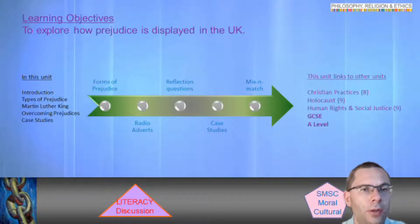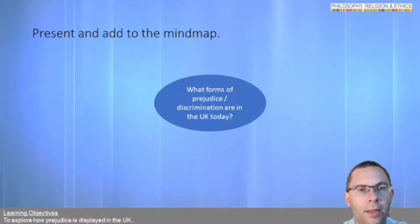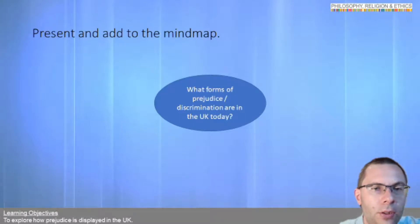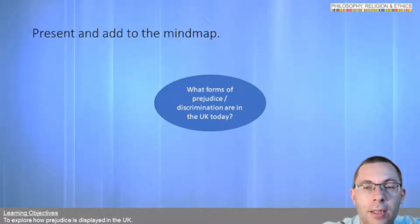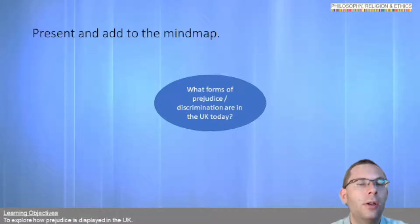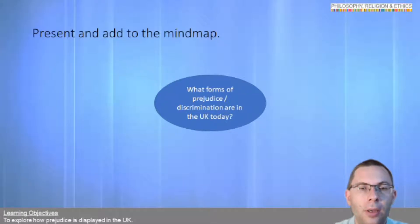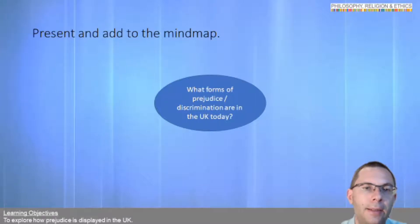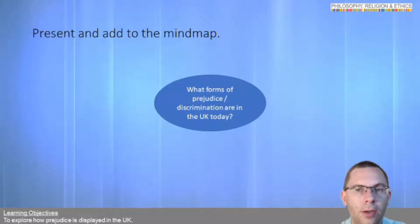We're going to look at some forms of prejudice, some radio adverts, reflection questions and case studies, and some mix and match. To start off with, I'd like you to access the description below — you'll find a file called 'Types of Prejudice Group Research'. Access that one, not the case studies one — you'll need that a little bit later. This goes through the different forms of prejudice and discrimination that occur or have occurred in the UK. I'd like you to add a sentence or two about each of them around your mind map. Pause me now — that's going to take probably another 10 to 15 minutes. Come back to me when you're done.